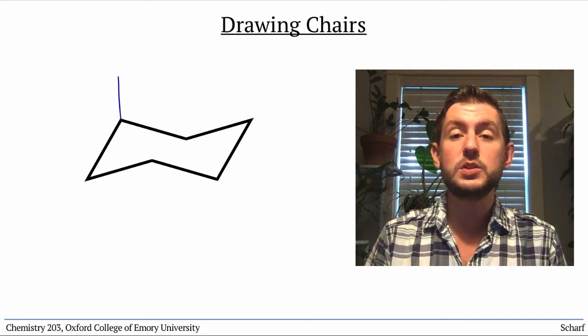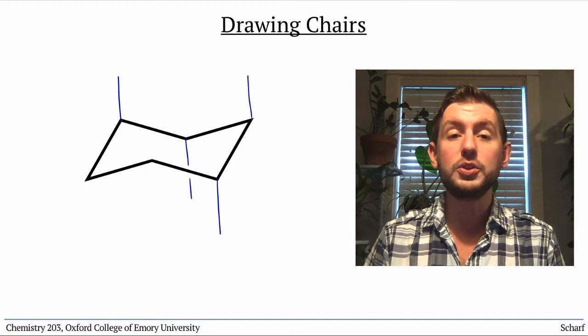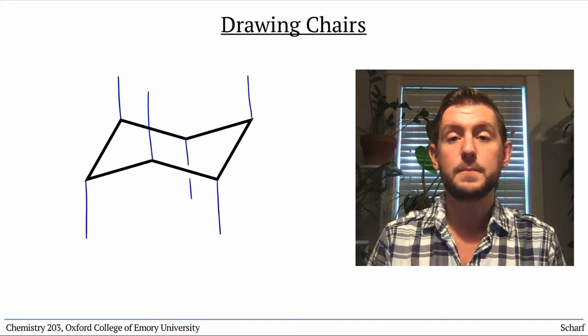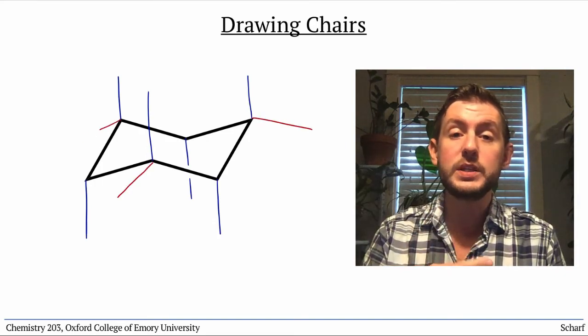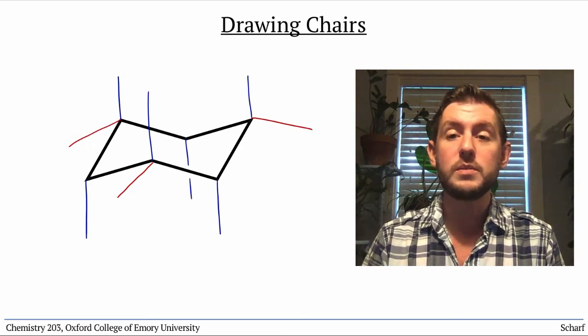We draw the axial substituents coming out of each carbon vertically, and they alternate up and down as we go around the ring. Wherever we have an axial substituent pointing up, the other substituent is equatorial and angling downward. We draw them like this.